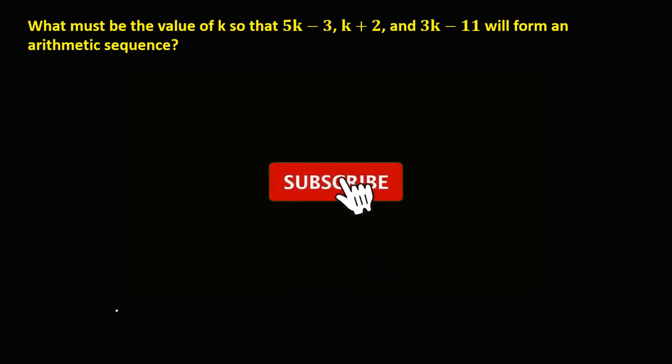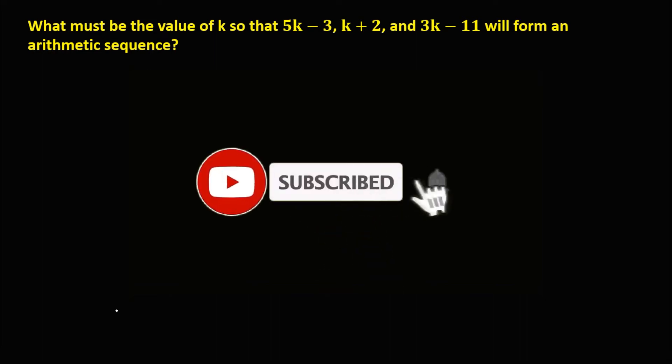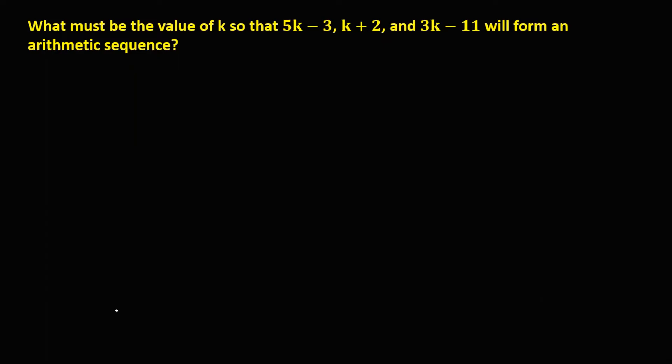Welcome to Madstoria. Let's have this problem: What must be the value of k so that 5k minus 3, k plus 2, and 3k minus 11 will form an arithmetic sequence?